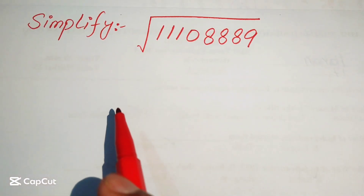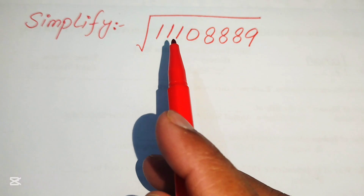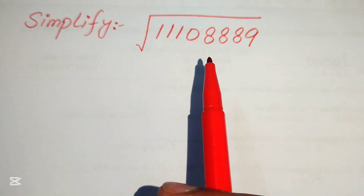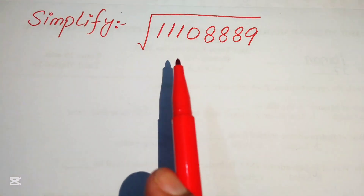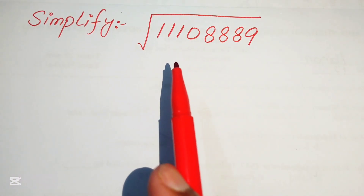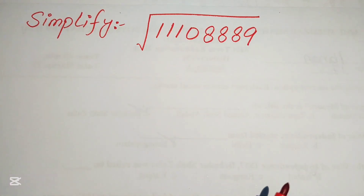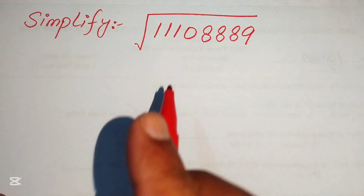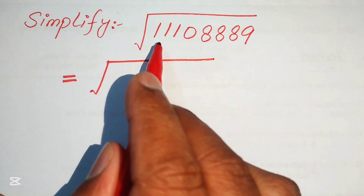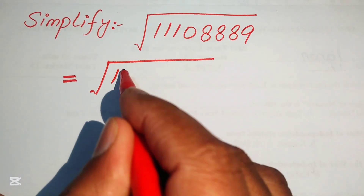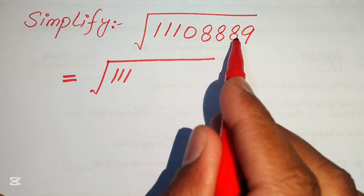Hello everyone. Today we simplify this nice radical expression. We have a triple one zero (1,110,000,000) and triple eight (888) into nine, and it's a whole square root. So we simplify this algebraic expression. The very first step we are going to do is rewrite this expression — here we have triple one (111), zero, triple eight (888), and nine.